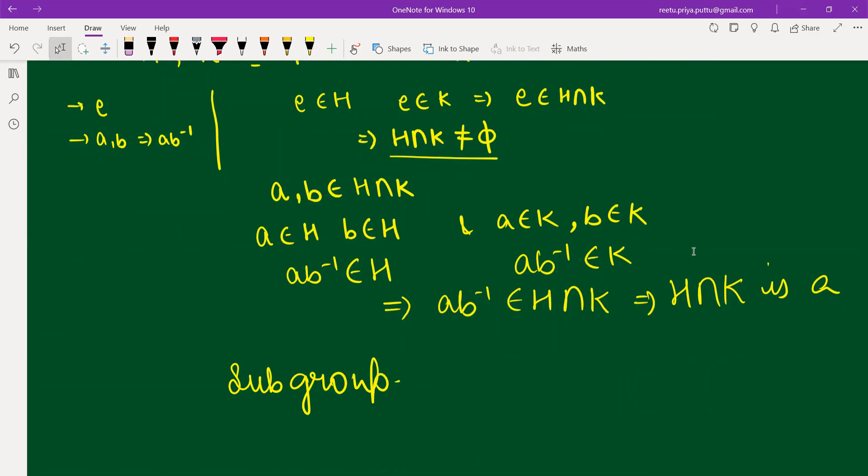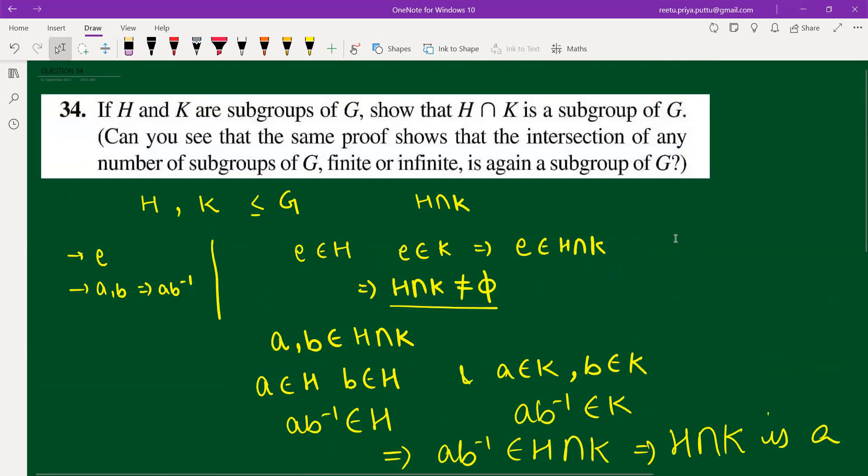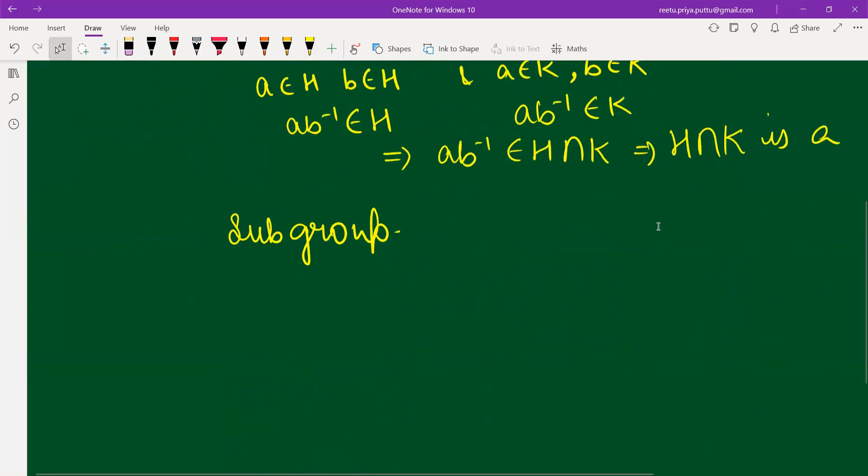We are done with the question for the first part. Now what the second part says: can you see that the same proof shows that the intersection of any number of subgroups of G, finite or infinite, is again a subgroup of G? So the answer will be yes. You can form it, you just have to write some subgroup you are considering.